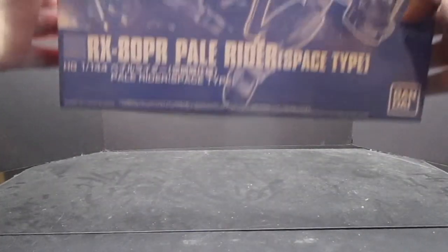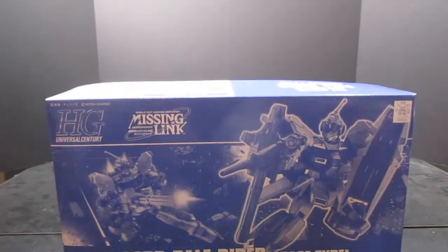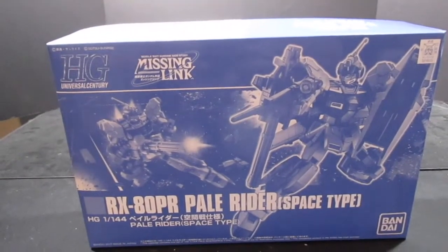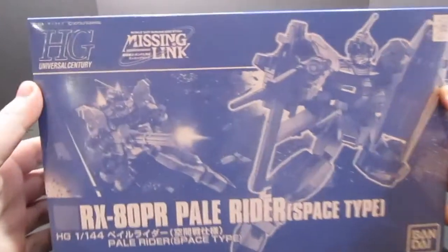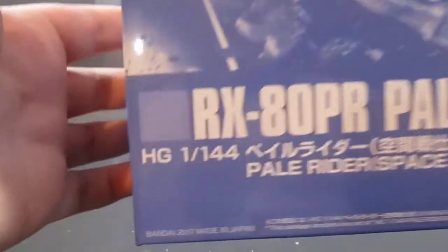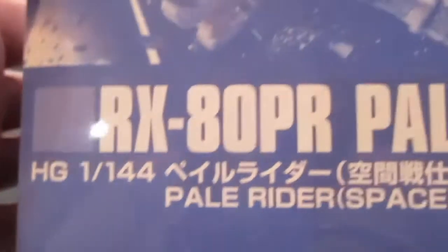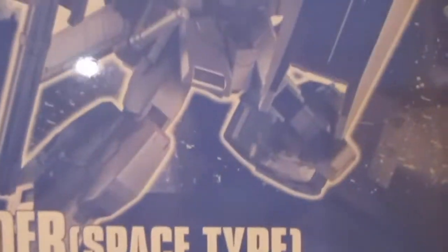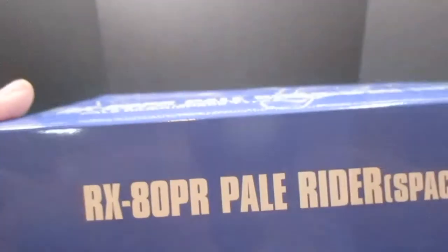Hey squadron mates, hope you guys are doing well. Time for another review. As you can see by the box here and by the title of the video, we're looking at the HGUC Pale Rider Space Type. The kit came out in 2017, though the original Pale Rider I believe came out in 2014 or 15.